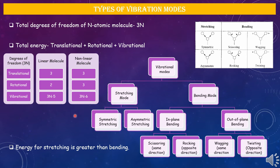Vibrational modes can be divided into two parts: stretching mode and bending mode. Stretching mode can be further divided into symmetric stretching and asymmetric stretching. Bending modes can be divided into in-plane bending and out-of-plane bending. In in-plane bending, bonds move within the plane; in out-of-plane bending, bonds form an angle with respect to the plane. In-plane bending is divided into scissoring and rocking; out-of-plane bending is divided into wagging and twisting.